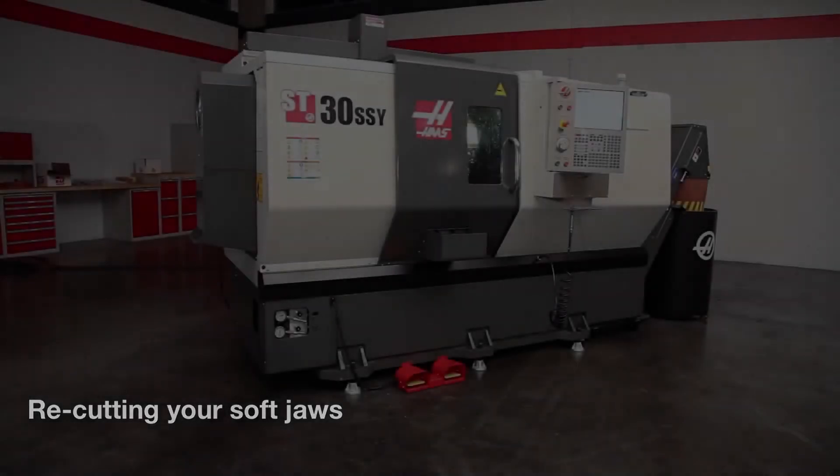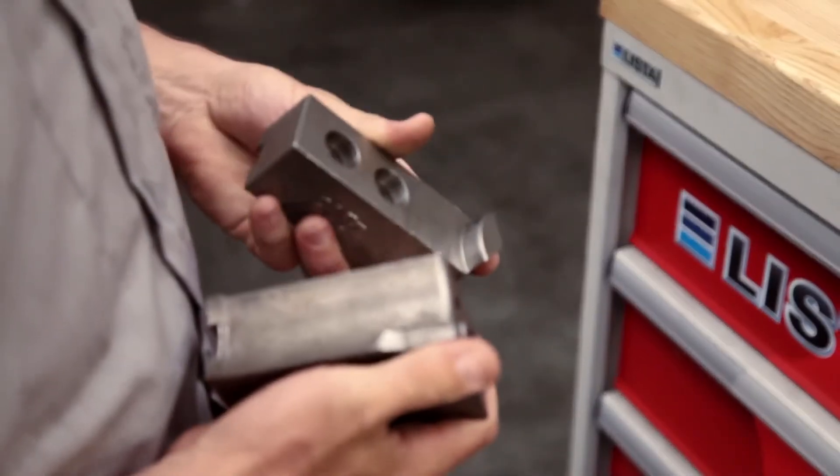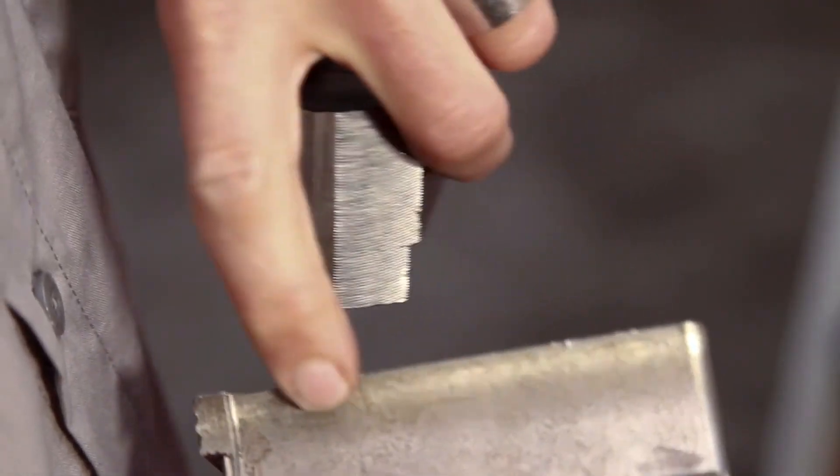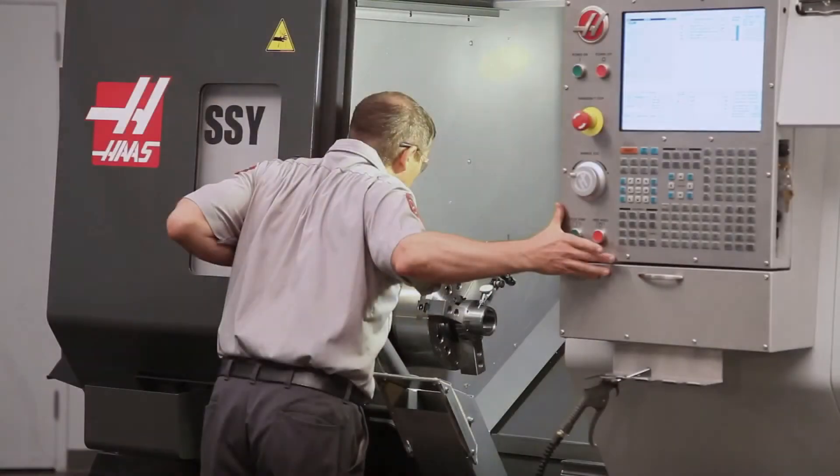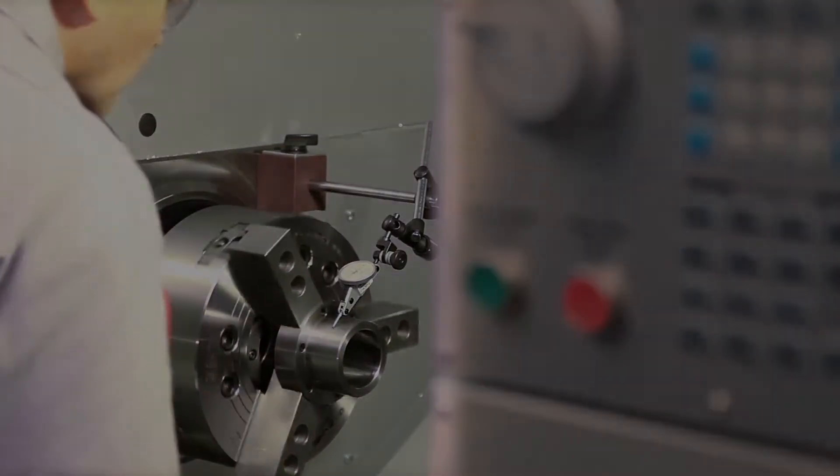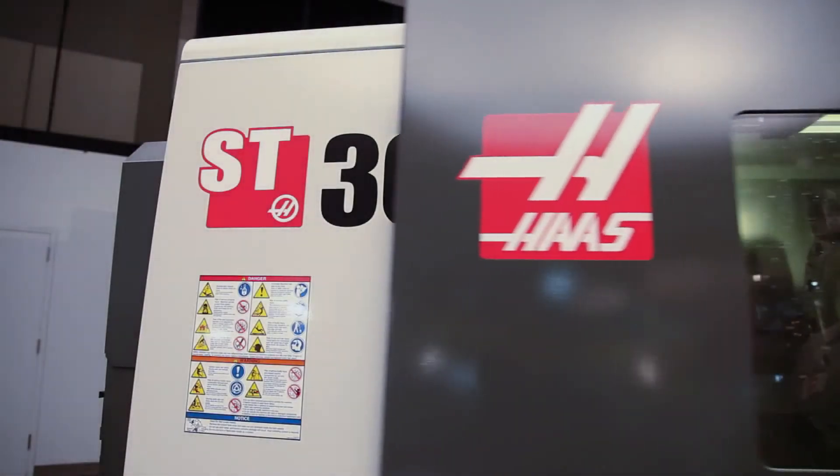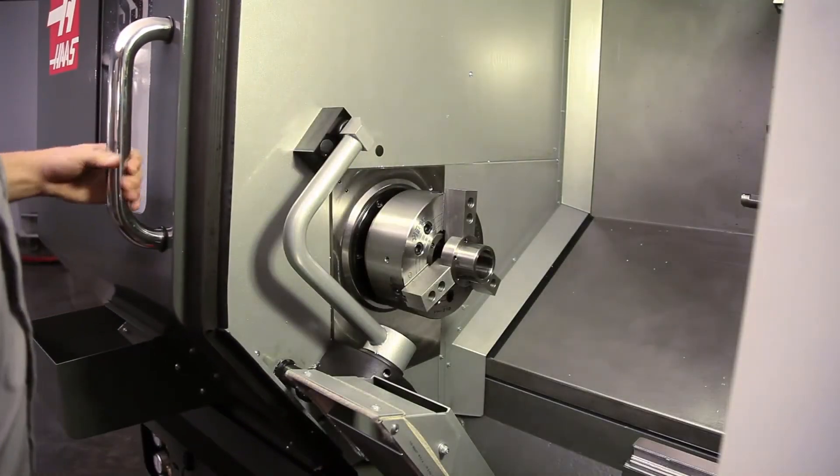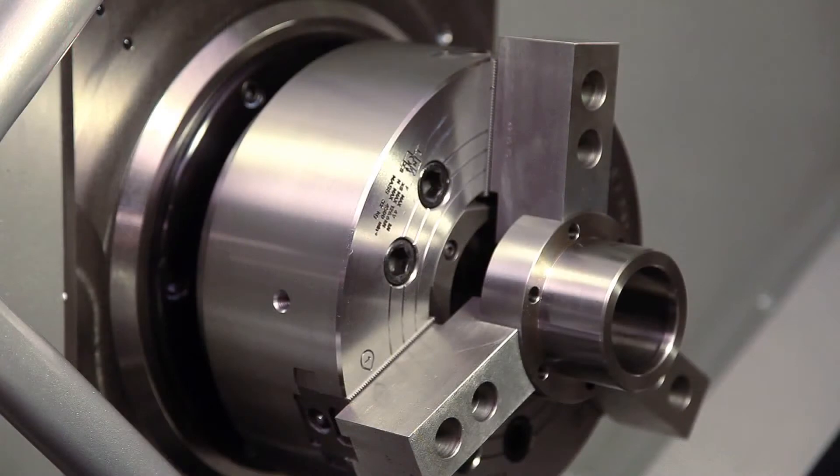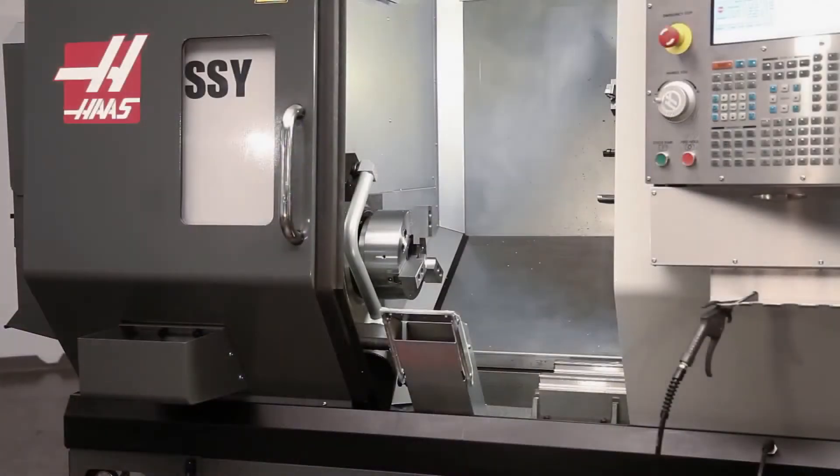There are many reasons to go back and re-cut your soft jaws. For example, your jaws might be worn or damaged, or maybe your parts are beginning to creep out of tolerance. Andrew plans to re-use the jaws that were originally cut to hold our bearing housing part. Since he knows that he'll be using these same jaws on this same machine with this same chuck in the future, there is no need to re-cut.